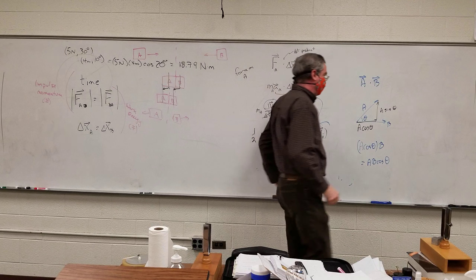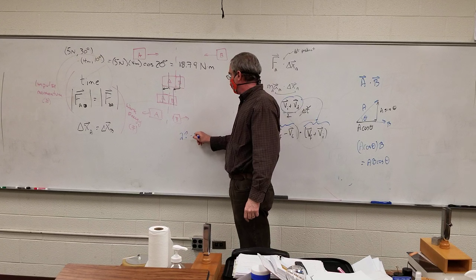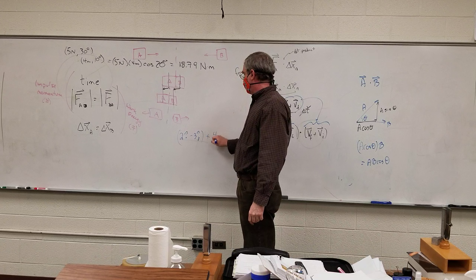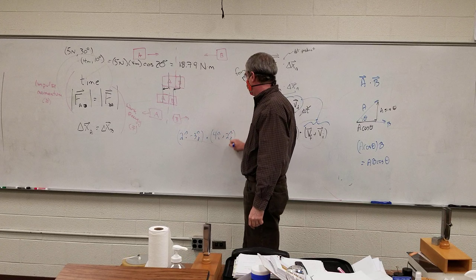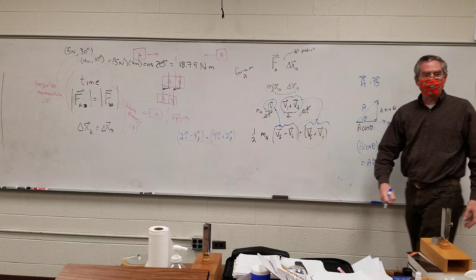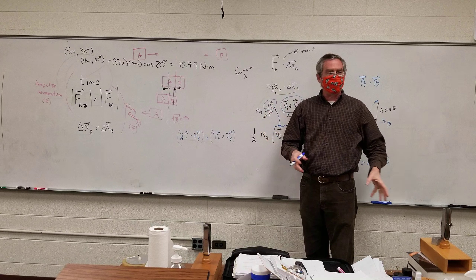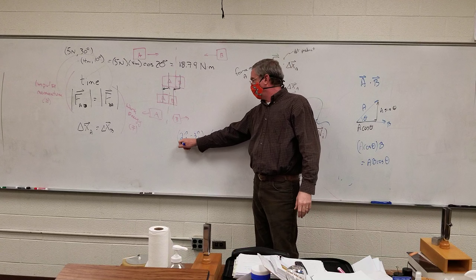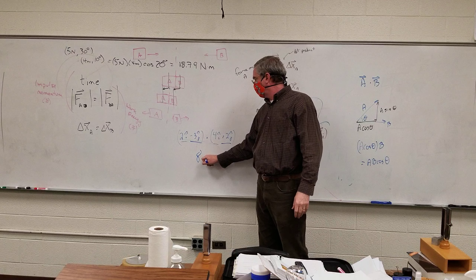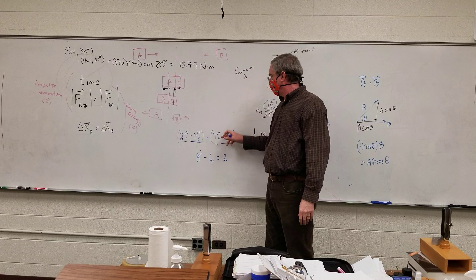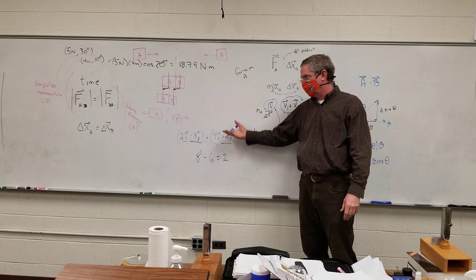If we have it in i-hat and j-hat components — for example, (2î − 3ĵ) dot (4î + 2ĵ) — since we care about multiplying the parallel parts, we just multiply matching components. That gives 2×4 = 8, and (−3)×2 = −6. So the answer is 2.